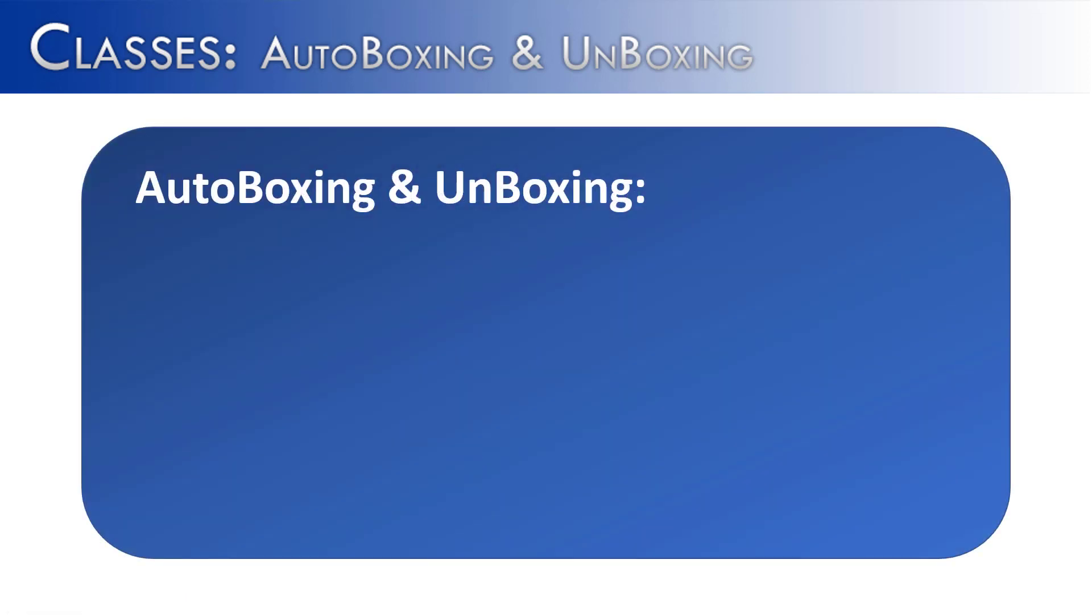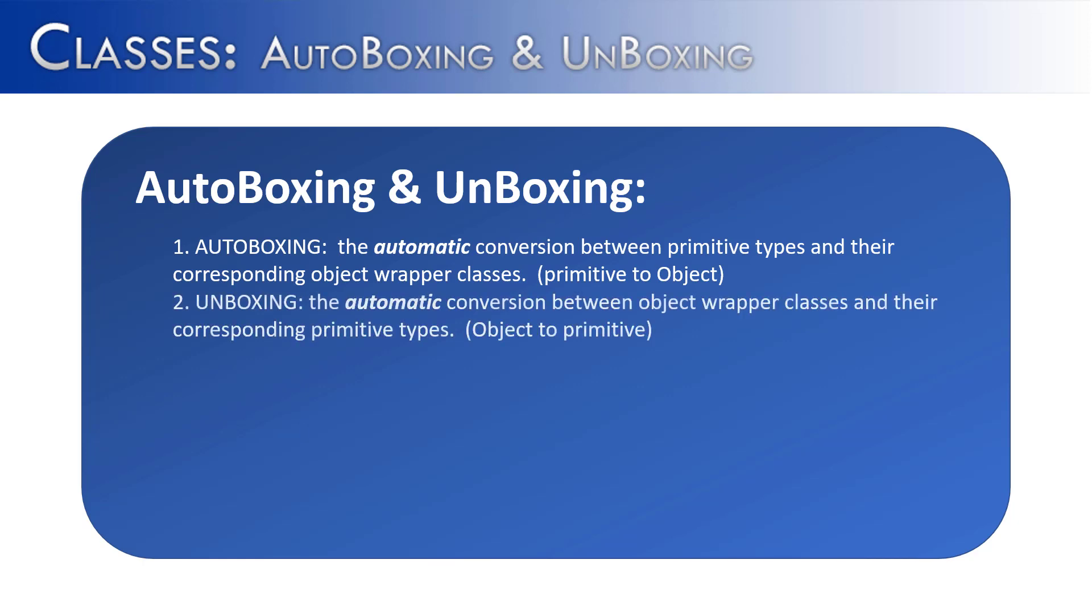So let's sum up this autoboxing and unboxing mystery. Autoboxing is, importantly, the automatic conversion between primitive types and their corresponding wrapper classes. Primitive to object, int to Integer, lowercase double into uppercase Double. Unboxing, automatic conversion between object wrapper classes and their corresponding primitive. So object to primitive, Integer to int, Double to lowercase double. What are the methods of autoboxing? The first one is assignment, assigning a variable of the corresponding wrapper class. The second, passing as a parameter.